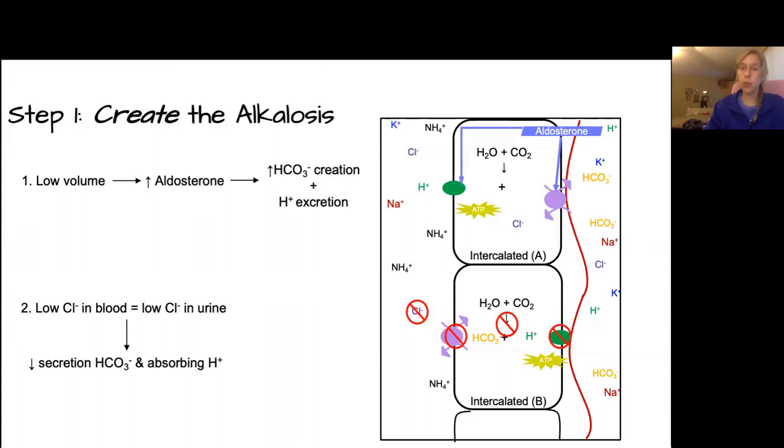So in the low volume state with low chloride, we have high aldosterone, meaning that we're going to be creating the bicarbonate in the intercalated A cell. But we're not going to have enough chloride in the filtrate to be able to exchange for bicarbonate to help excrete some of that extra bicarbonate, or to create new hydrogen to absorb, to also try and balance out the extra bicarbonate with extra acid.